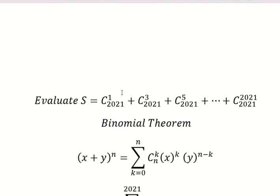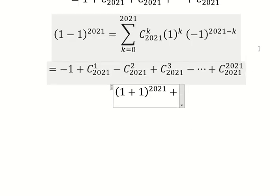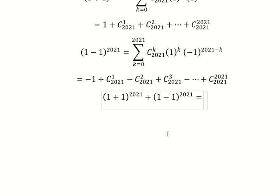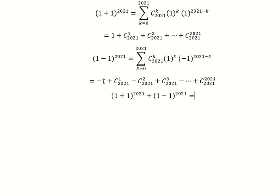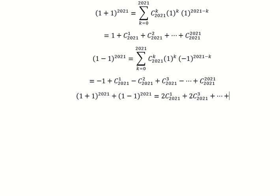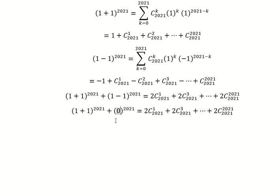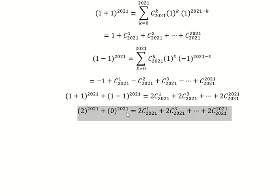Now let's say we want to find the value of this. We have this one here and we add the value of this one here. If we look carefully, 1 minus 1 cancels. This one plus this one gives number 2. Cancel this one, and the next one gives 2 again. This continues until we have 2 of this one. So 1 minus 1 gives 0, and 1 plus 1 gives 2. We simplify, and we get 0 here.